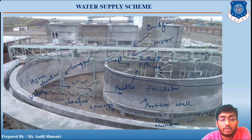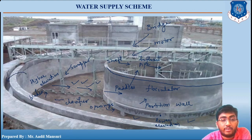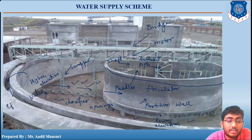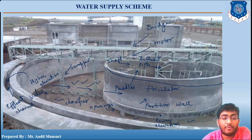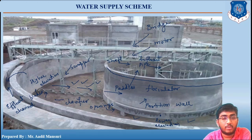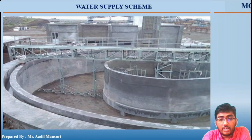The clear water will be removed from the top of the clarifloculator. After the water is purified, it will enter this channel known as the effluent channel, and from here the water is sent to the rapid sand filter.